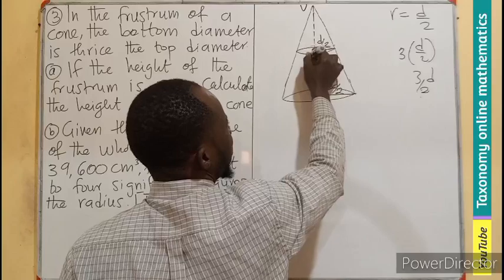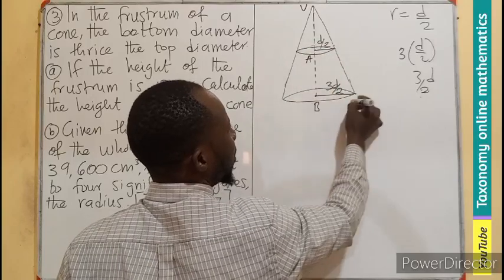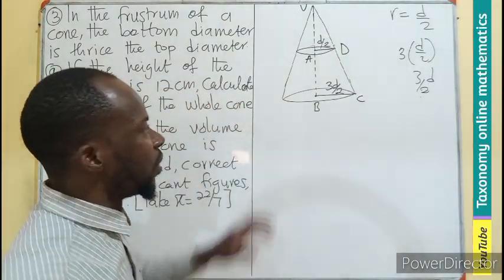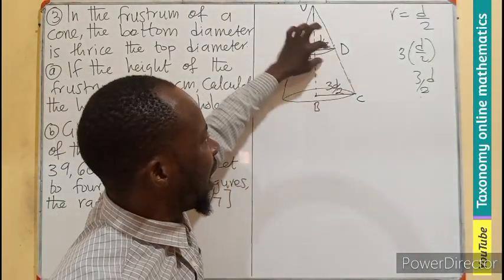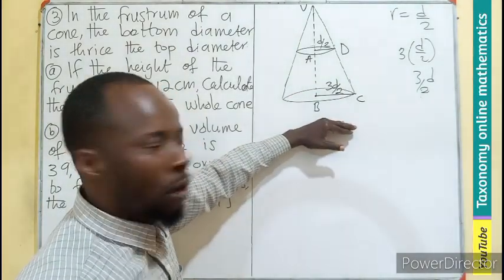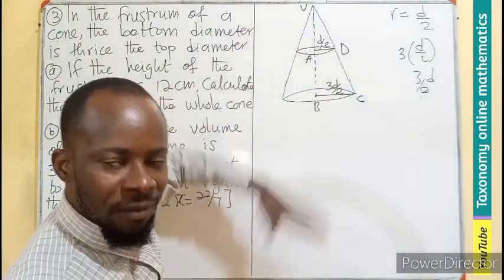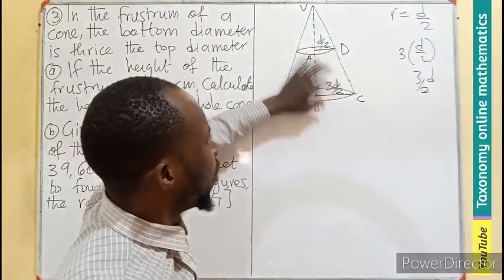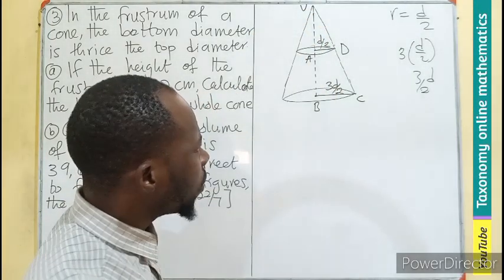Let me label the vertices V, A, B, C, D. Now AD is the radius of the smaller cone. BC is the radius of the big cone, which is at the same time the radius of the frustum.